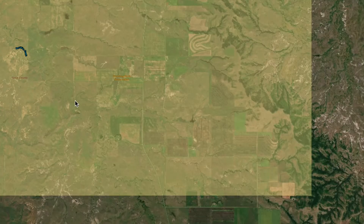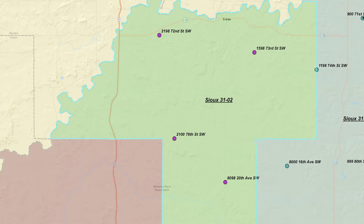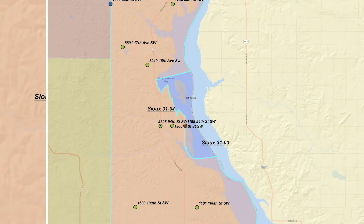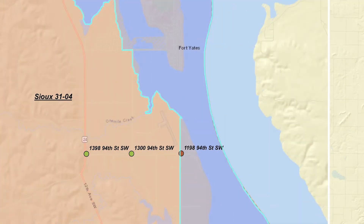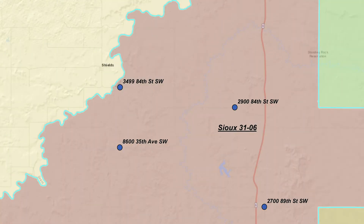In each of the precincts in the tribal lands, I created quadrants. And in each quadrant, I created an address. It was somewhat laborious, as you have to zoom in and zoom out and see if there are buildings or anything nearby, but find a location where it's suitable for an actual address.